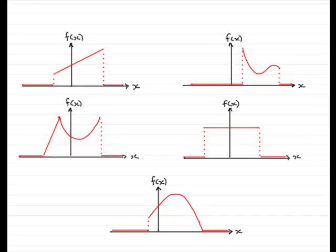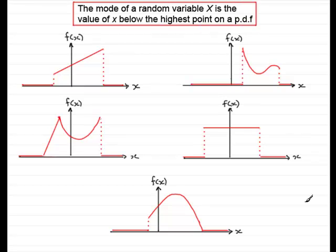When we want to find the mode, what we're looking for is the value of x below the highest point on a probability density function. It's the point where the random variable x is most dense.